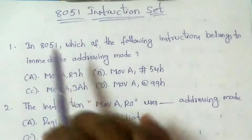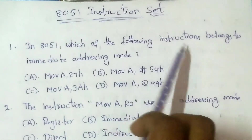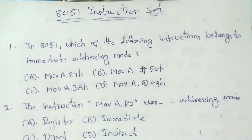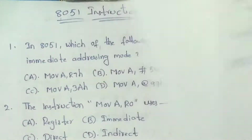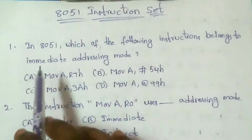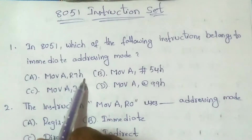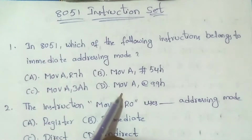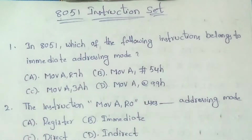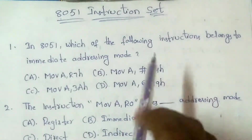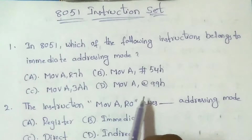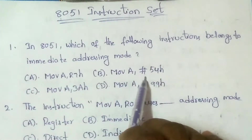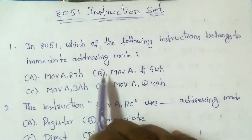Question: In 8051, which of the following instructions belongs to immediate addressing mode? In immediate addressing mode, the data is preceded by a hash (#) symbol. Options: A) MOV A, R7H; B) MOV A, #54H; C) MOV A, 3H; D) MOV A, @R0. Immediate addressing mode uses '#' and indirect addressing mode uses '@'. The answer is option B: MOV A, #54H.